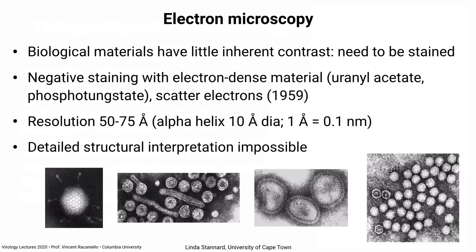Here's an adenovirus — for the first time they saw fibers sticking out of the particle, which was quite interesting. You can see something repeating about the particle structure. Here's a hepatitis B virus, an influenza virus, and a poliovirus. You get some information but not enough detail to know how they are composed. Just last week, they were taking negative-stain electron micrographs of the new coronavirus to see what it looked like.